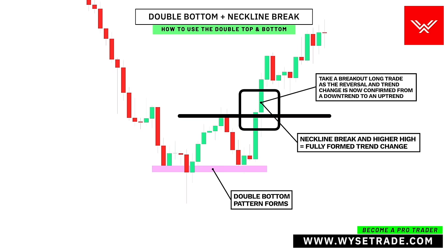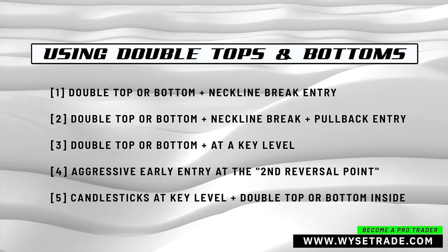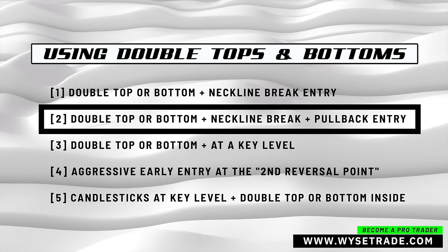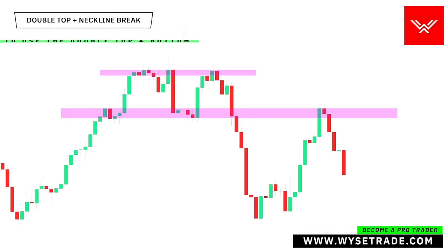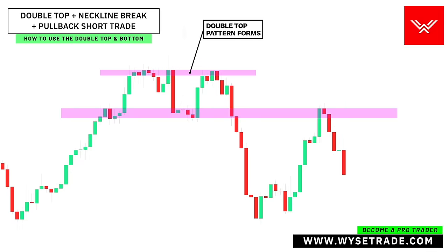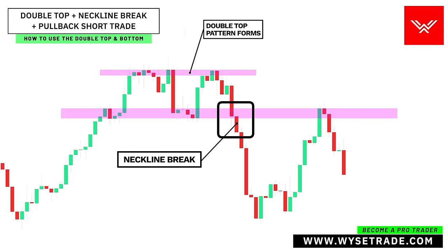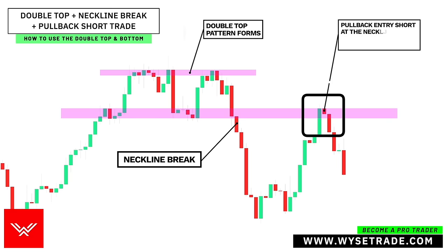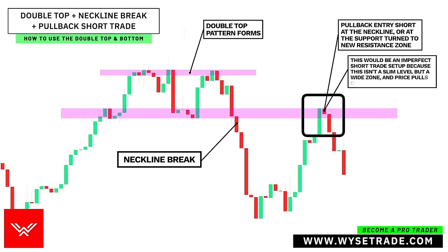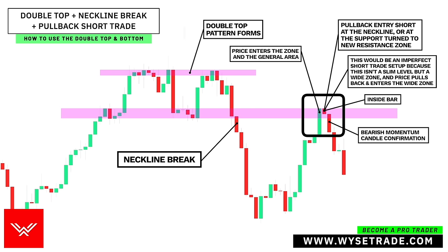The second way to use double tops and bottoms is to wait for a pullback entry after the neckline break. You first have your double top pattern. Neckline break here. But instead of taking the breakout entry, you can take a pullback entry at the neckline and at the support turn to new resistance zone. Now this would be an imperfect short trade setup, because this isn't a slim level but a wide zone. Price pulls back and enters the wide zone — you had an inside bar and a bearish momentum candle confirmation.